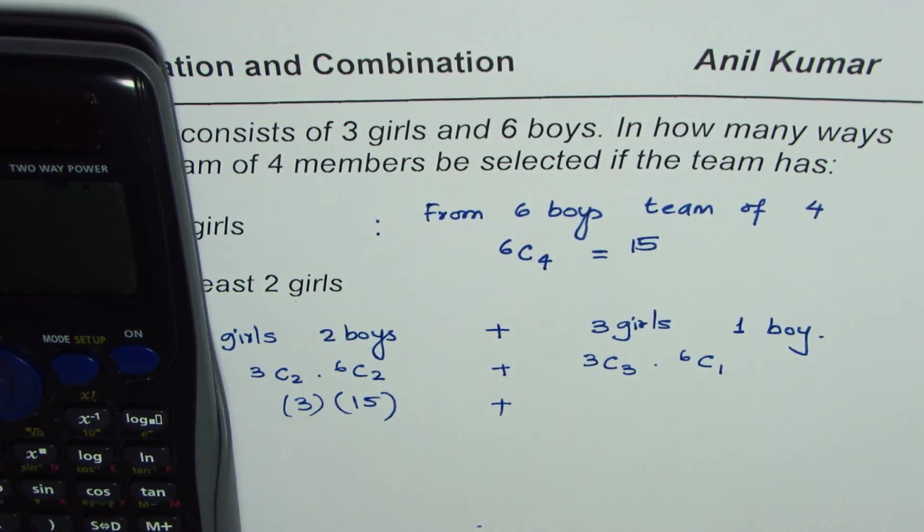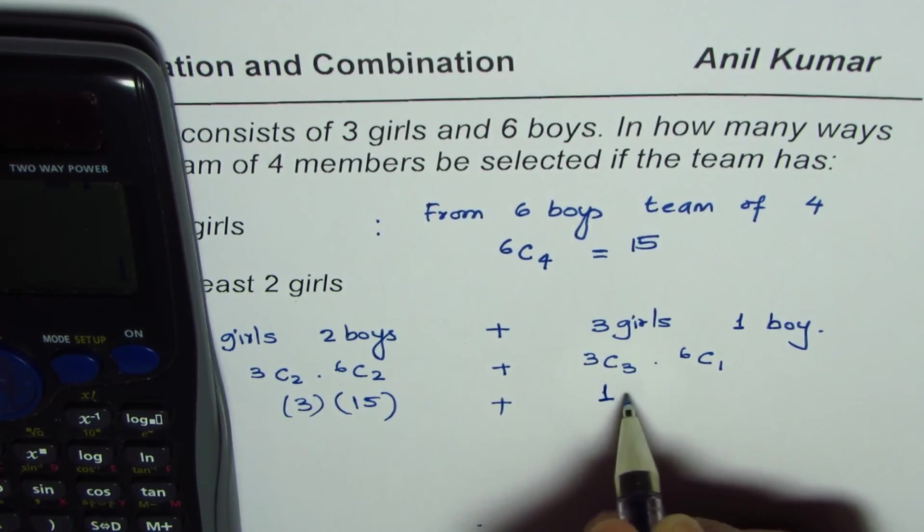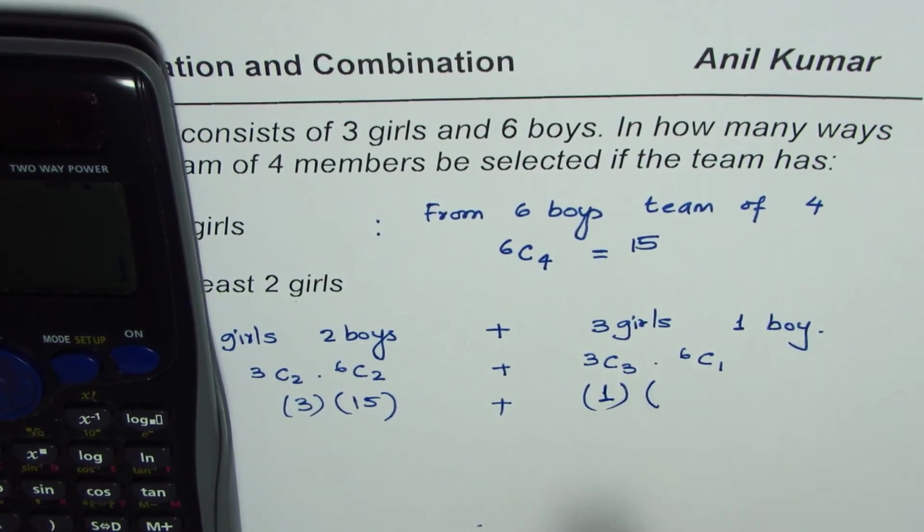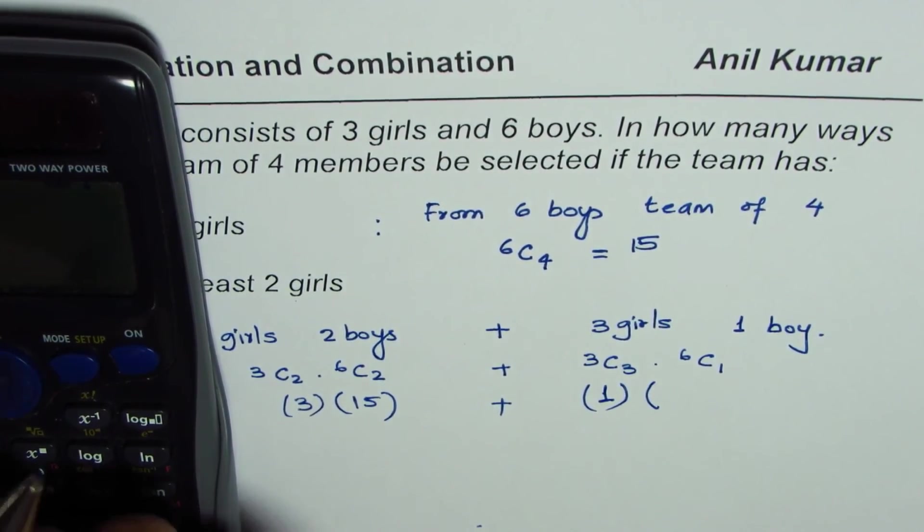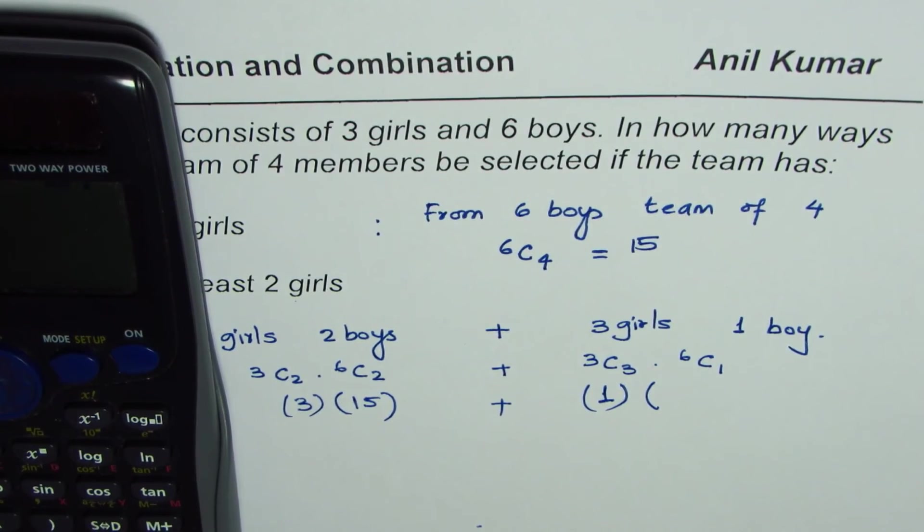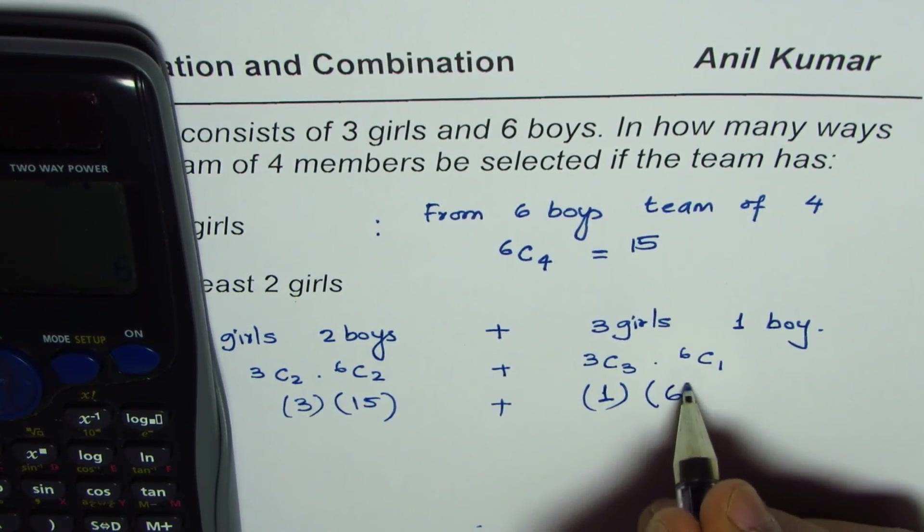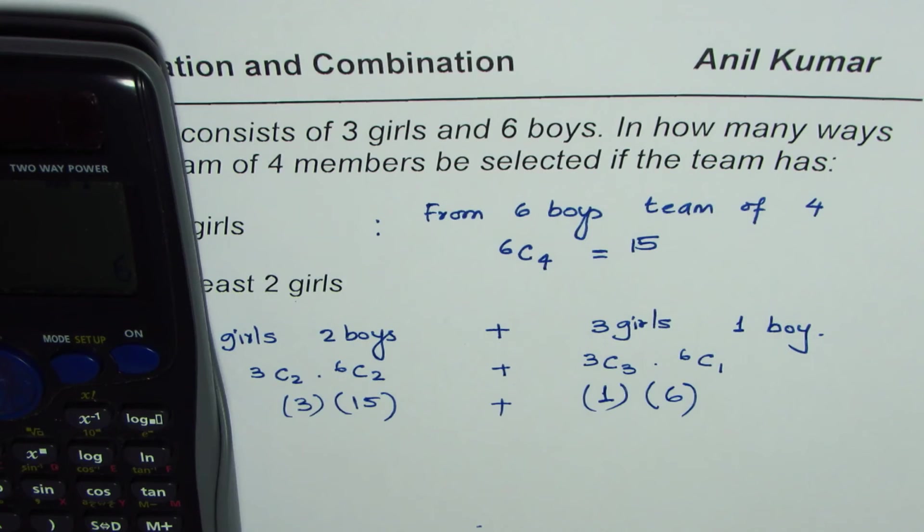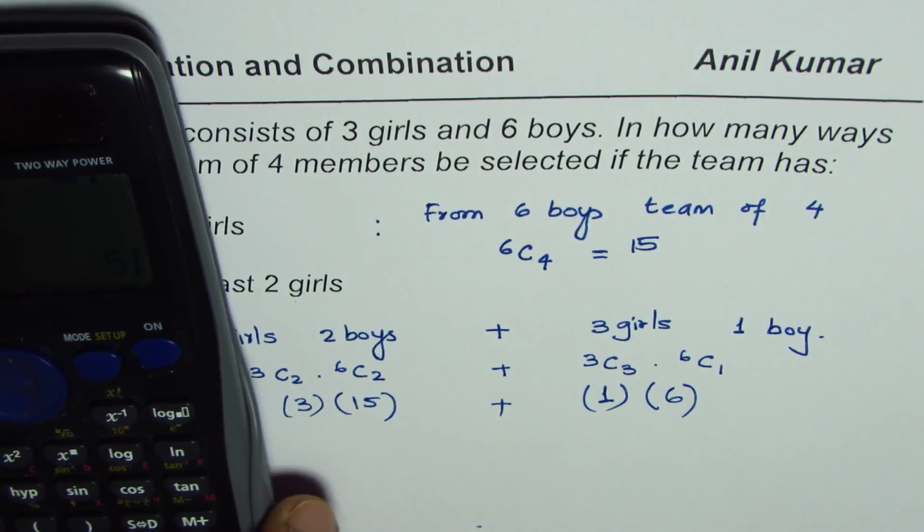So we have three C three equals to one times six C one, six C one, okay, six. And so we get our answer three times 15 plus six, which equals to 51.